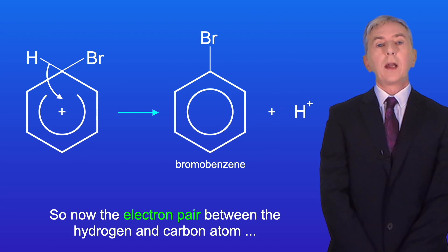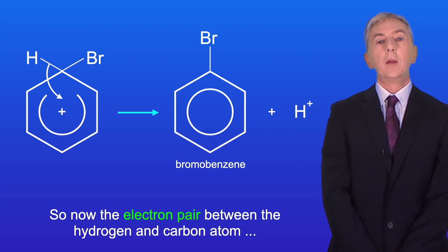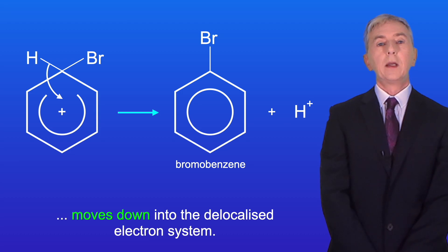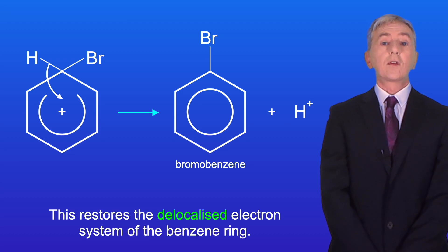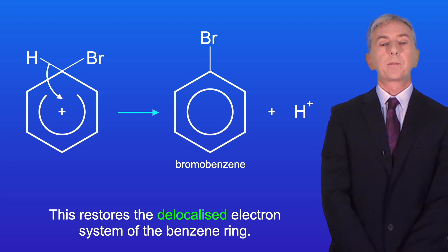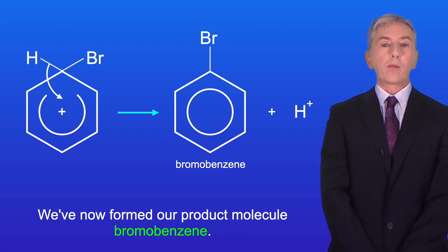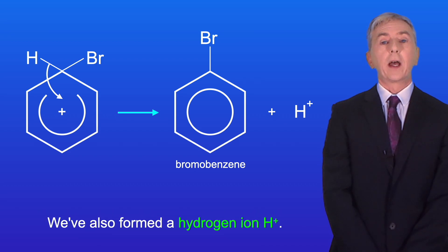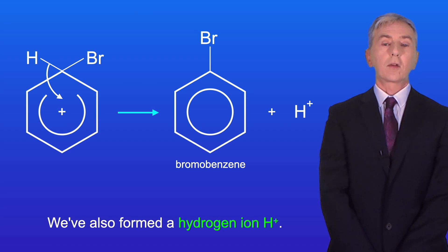The electron pair between the hydrogen and carbon atom moves down into the delocalized electron system, and this restores the delocalized electron system of the benzene ring. We've now formed our product molecule bromobenzene, and we've also formed a hydrogen ion H+.